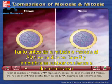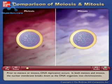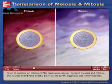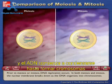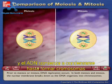Prior to meiosis or mitosis, DNA replication occurs. In both meiosis and mitosis, the nuclear membrane breaks down as the DNA organizes into chromosomes.